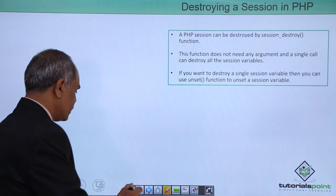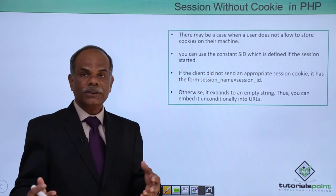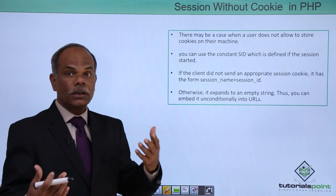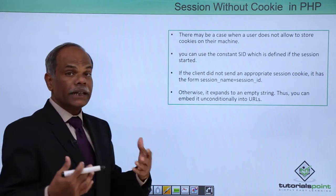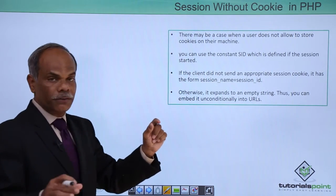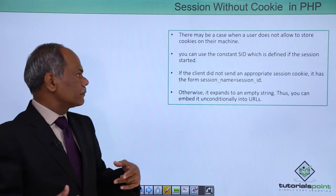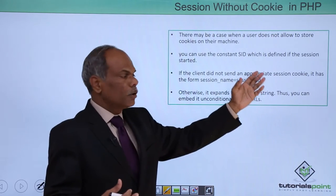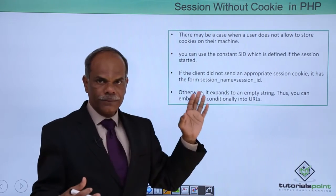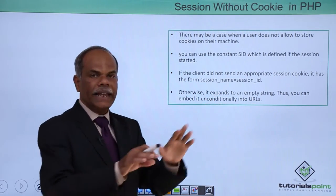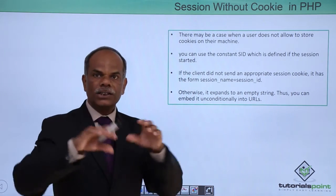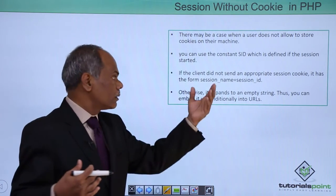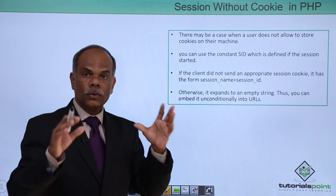Sometimes the client may not allow creation of session cookies on the client computer. In that case, you can use the constant SID — the session ID that is generated and defined when the session starts. If the client did not send an appropriate session cookie, SID takes the form session_name=session_id. Otherwise it expands to an empty string. You can embed it unconditionally in your URL as a workaround when the client does not permit session cookie storage.